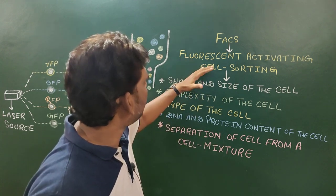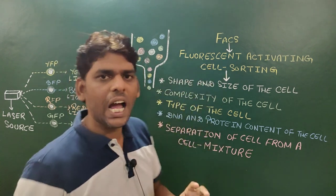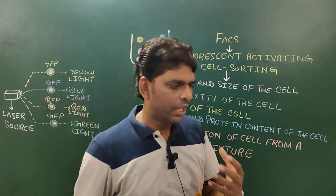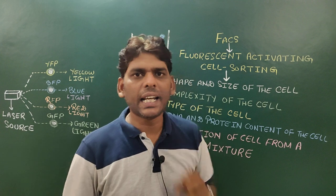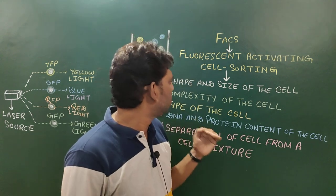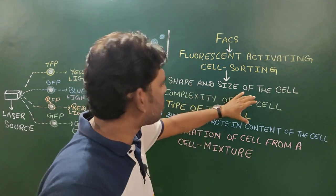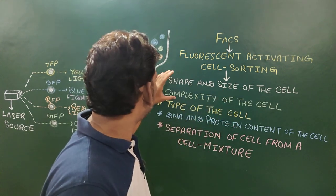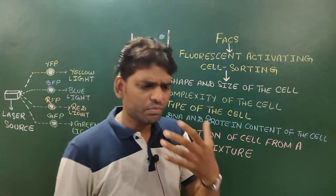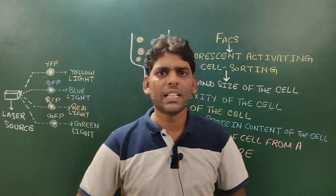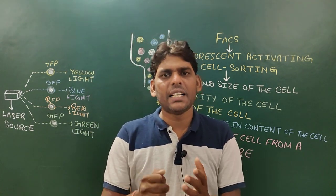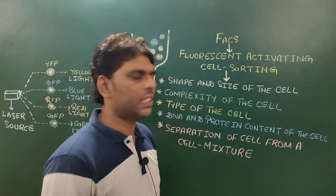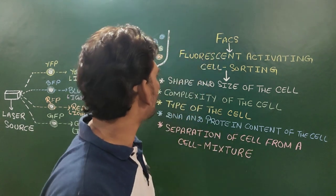Before the discussion of FACS, I would like to give you a brief idea about flow cytometry. Flow cytometry is a technique which is used to determine the shape and size of the cell and complexity of the cell. These two functions are performed by flow cytometry by using a laser beam which is scattered by the cell. But in a modified version of flow cytometry — that is, Fluorescence Activated Cell Sorting —